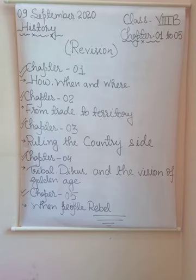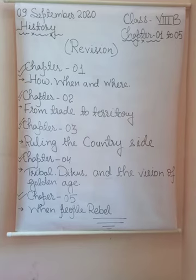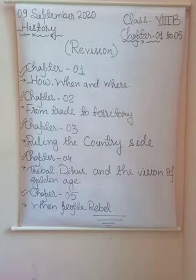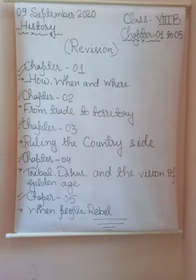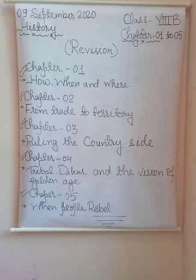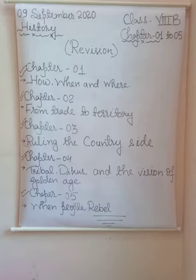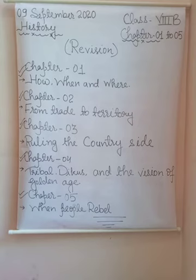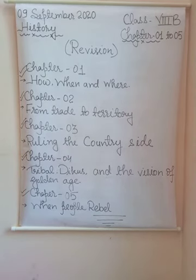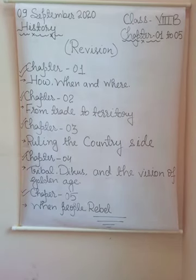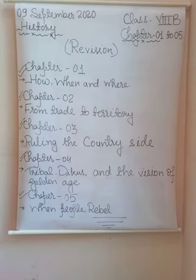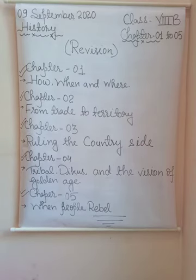The next topic is indigo on the land of raiyats. Under the raiyati system, planters pressurized village headmen to sign contracts on behalf of the raiyats. Those who signed the contract received cash advances from the planters at low interest rates to produce indigo. The raiyat had to cultivate indigo on at least 25% of the area under his holding. When the crop was delivered to the planters after harvest, a new loan was given to the raiyat. The price paid to peasants for the indigo they produced was very low, and the cycle of loans never ended.